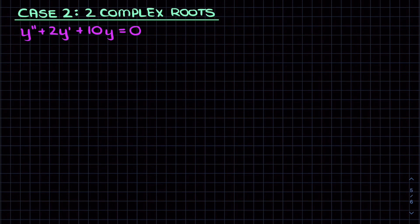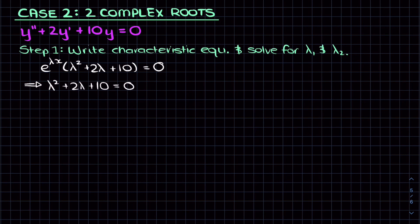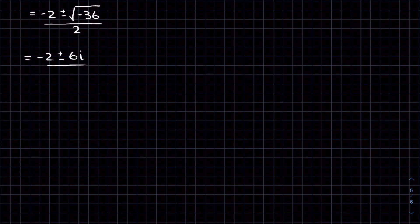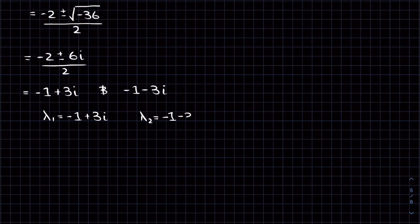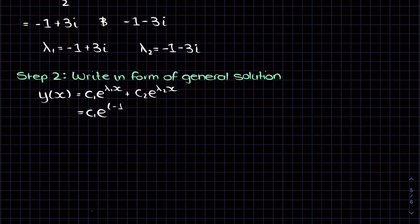Let's try a different example. Again we have a second order linear homogeneous ODE with constant coefficients, so we can use the characteristic equation method. We do the same thing as last time and write the characteristic equation. Since e to the lambda x cannot equal zero, we're left with lambda squared plus 2 lambda plus 10 equals zero. To find lambda we need to use the quadratic equation. Using this method we now get complex numbers for our two solutions: lambda 1 equals minus 1 plus 3i and lambda 2 equals minus 1 minus 3i. Using lambda 1 and lambda 2 we can write the general solution: y equals c1 e to the (minus 1 plus 3i)x plus c2 e to the (minus 1 minus 3i)x for some constants c1 and c2.